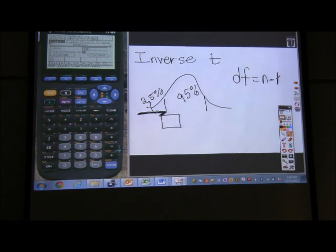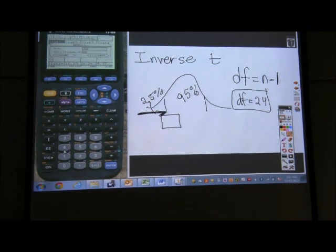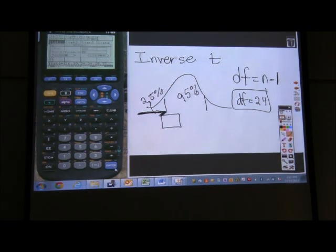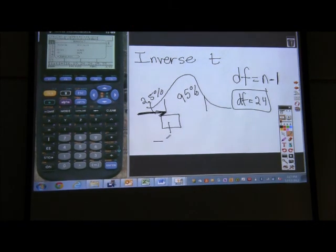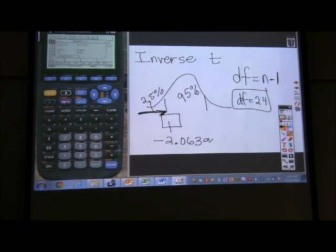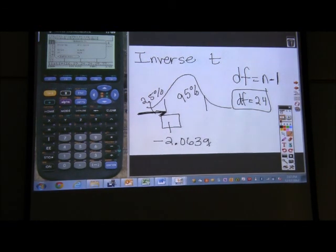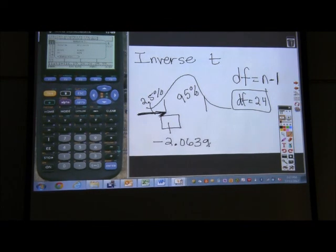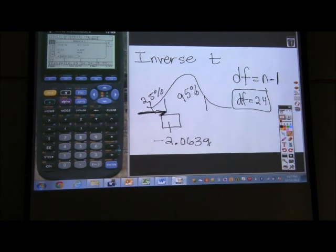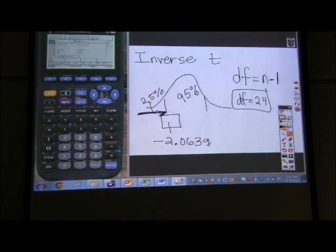So suppose I had a sample size of 25. What would my degrees of freedom be, Maddie? 24. 24. So I put 24 in here, hit enter, and my critical value is negative 2.0639. Now, t-curves are also symmetric. So once I find the left critical value, I also find the right critical value. So this would also be the right critical value.